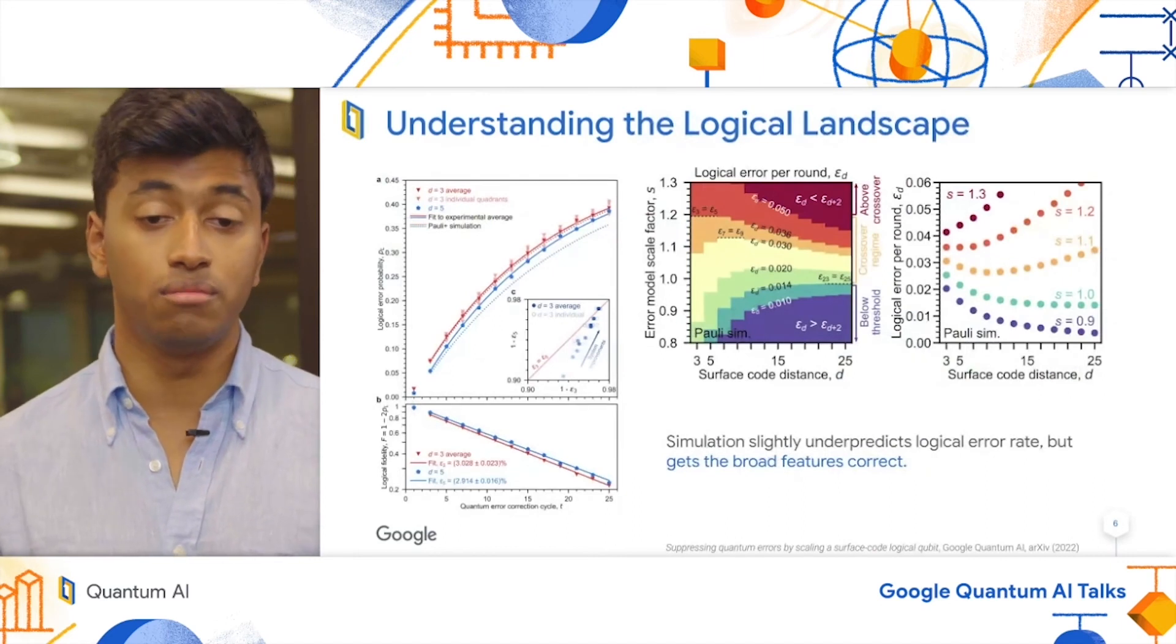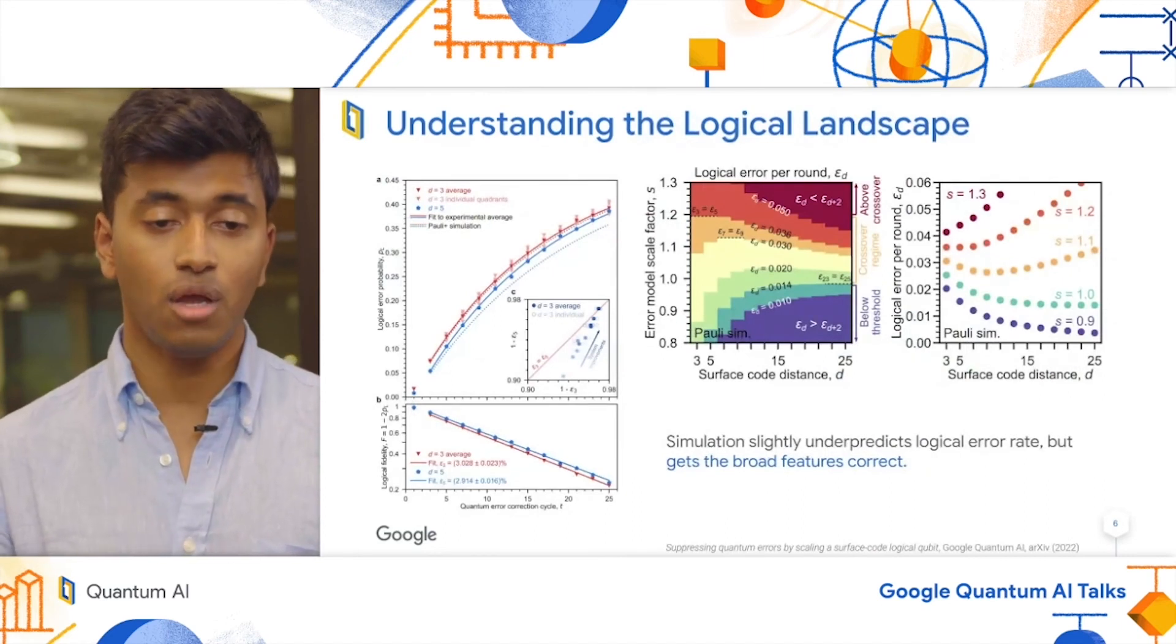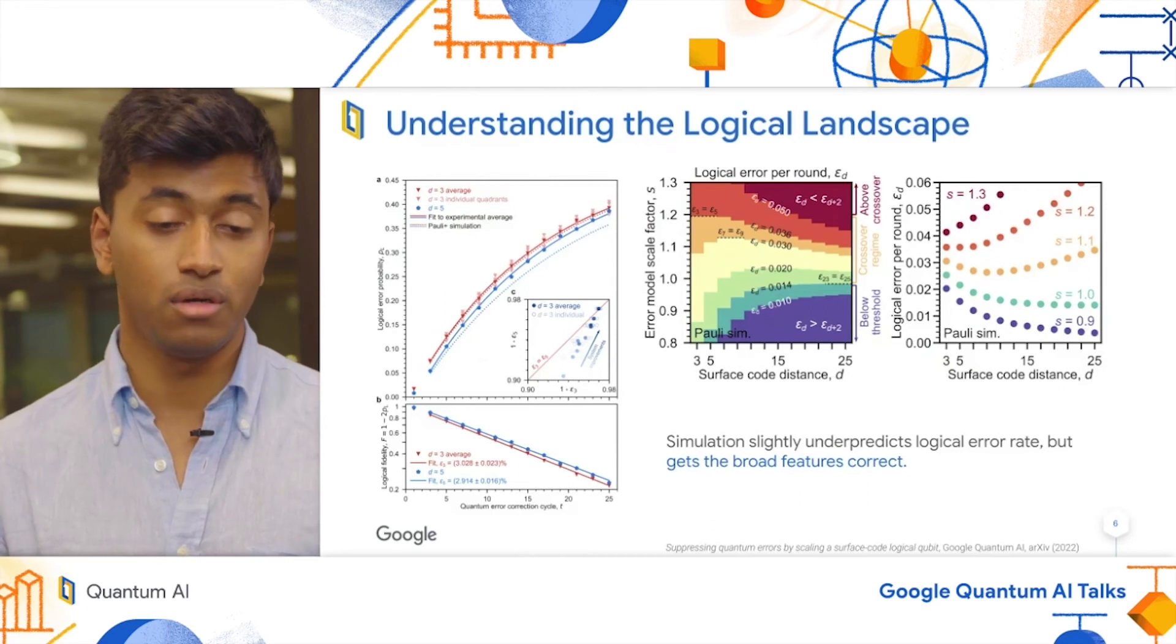We now want to move to the logical landscape. On the left, we have the data figure from the paper, with the solid lines being the actual fits of the experiment, and the dashed lines being the simulations.